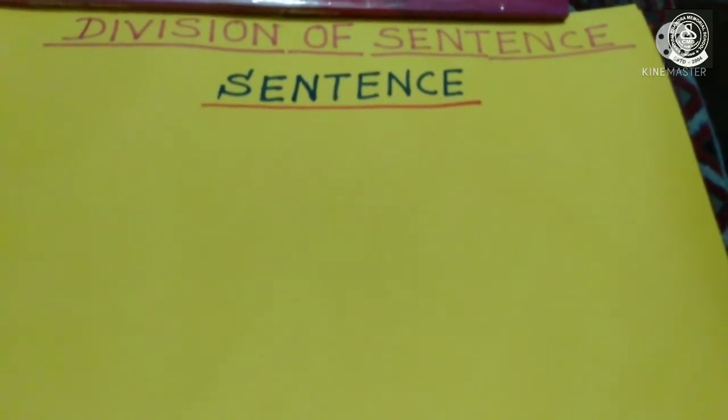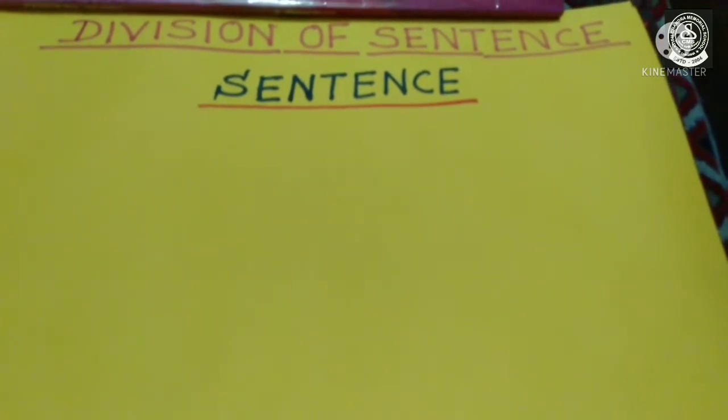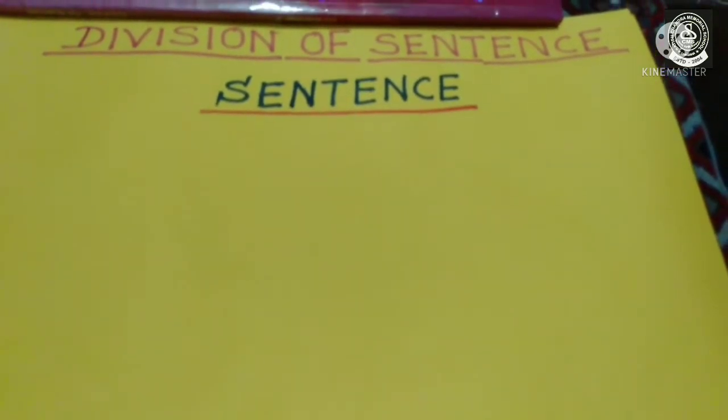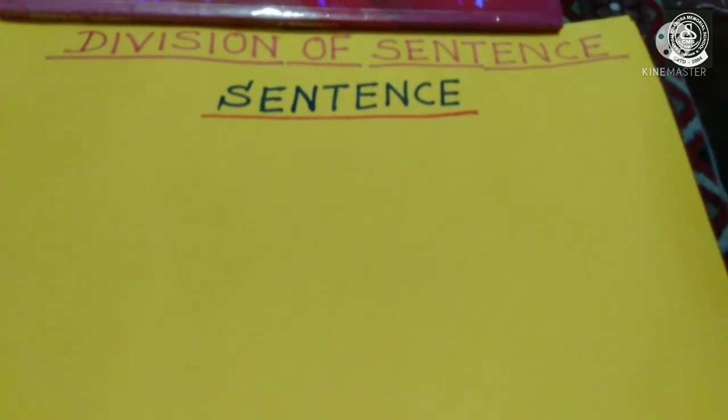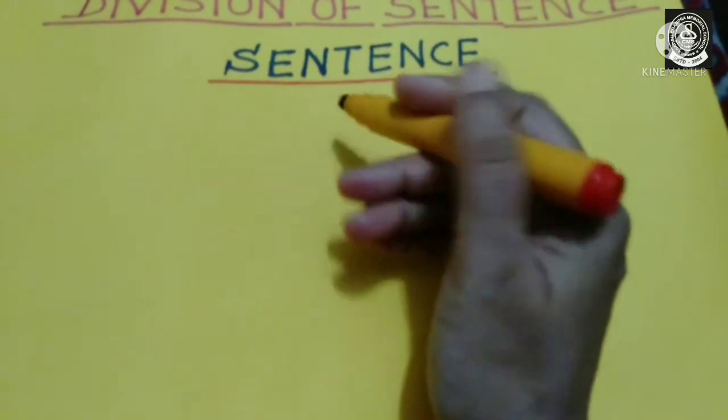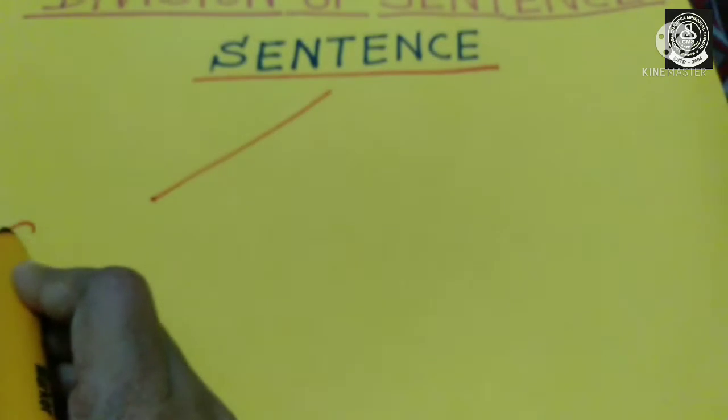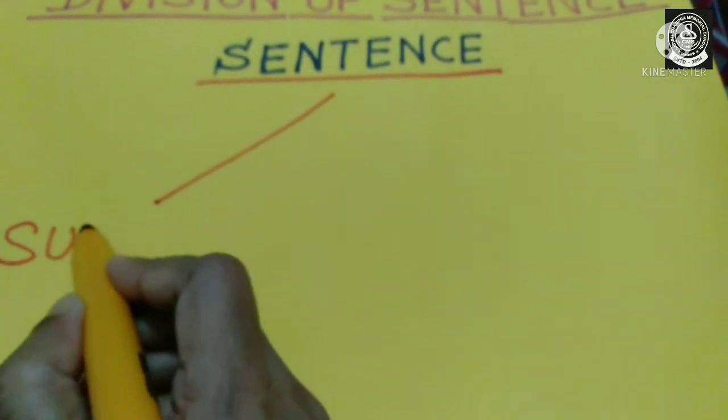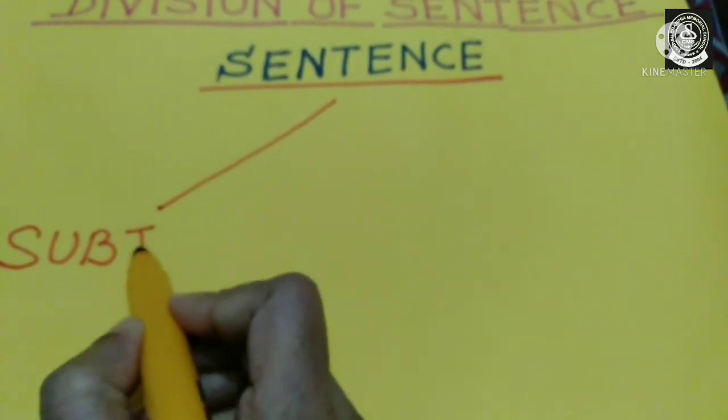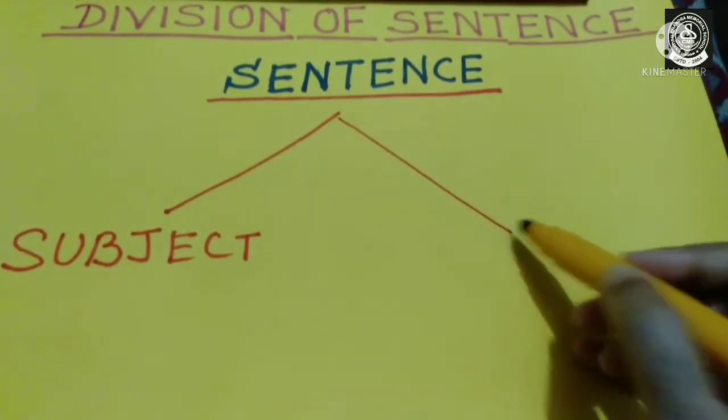We speak, read or write sentences. But do you know that every sentence consists of two parts? And what are those two parts? Well, the two parts are subject and predicate.